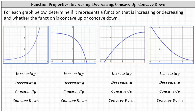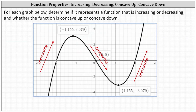Let's begin with increasing or decreasing. To determine if a function is increasing or decreasing, we read the graph from left to right just like we read a book. If the graph is going uphill from left to right, the function is increasing. If the graph goes downhill from left to right, the function is decreasing.